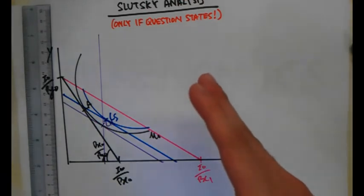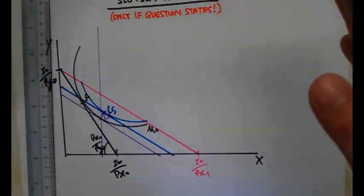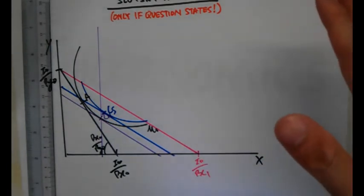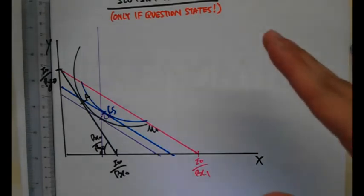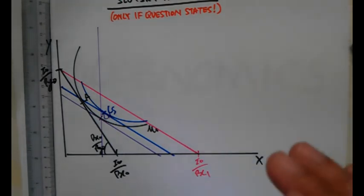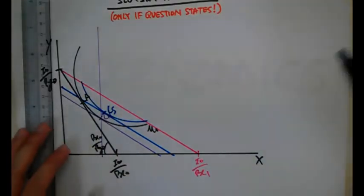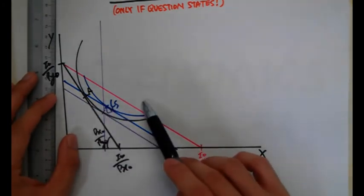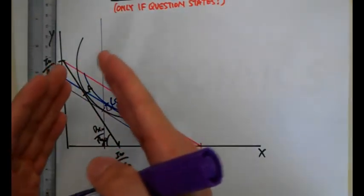Now we determine the change in real income for the Slutsky analysis. We look at the Hicksian imaginary budget line and the Slutsky imaginary budget line. If the Slutsky imaginary budget line is higher than the Hicksian imaginary budget line, real income has dropped. If the Slutsky line is lower than the Hicksian line, real income has increased. In this case, the Hicksian line is higher and the Slutsky line is lower, so real income has increased.